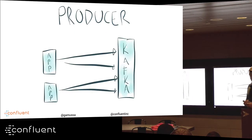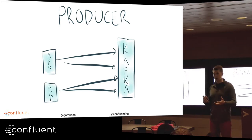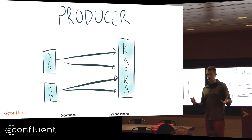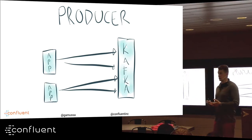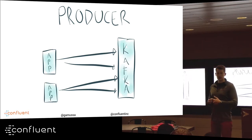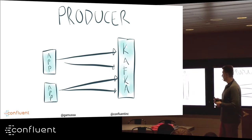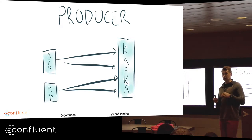The two basic concepts on top of Kafka are the producer and the consumer. If you've ever built a messaging system, you know there's a system that writes data to a queue or reads from a topic. The producer is the piece that writes data to the end of the log, and the consumer reads data from the log.